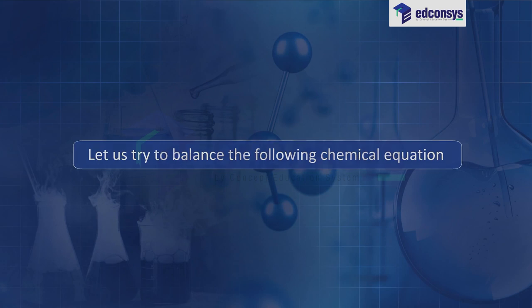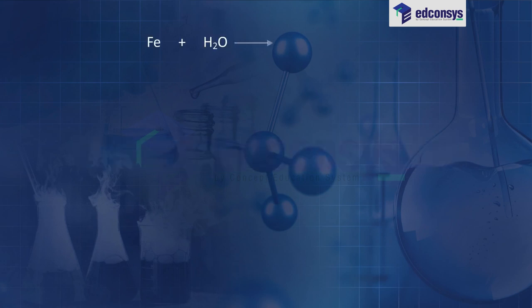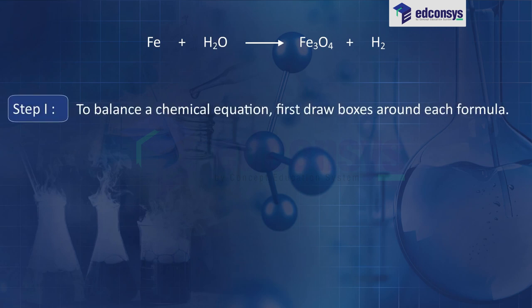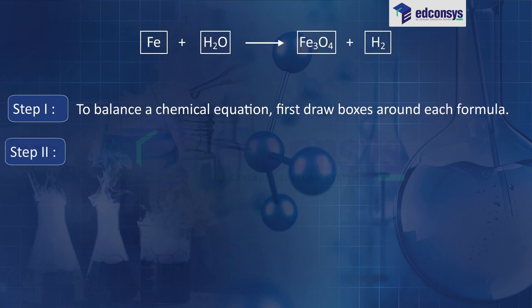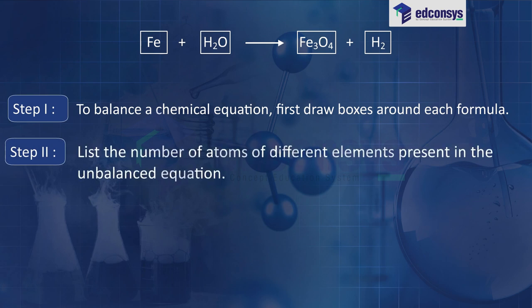Let us try to balance the following chemical equation: Fe + H₂O → Fe₃O₄ + H₂. Step 1: to balance a chemical equation, first draw boxes around each formula. Step 2: list the number of atoms of different elements present in the unbalanced equation.